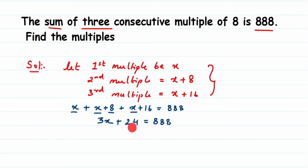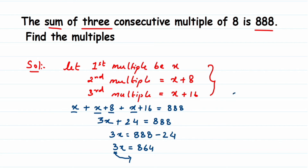Transposing 24 to the other side, it becomes negative: 3x equals 888 minus 24, so 3x equals 864. Now transposing 3 to the other side gives division: x equals 864 divided by 3. Dividing, we get x equals 288. So the first multiple is 288.